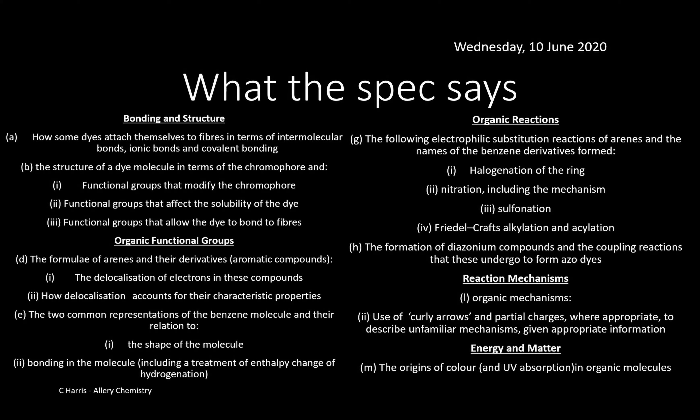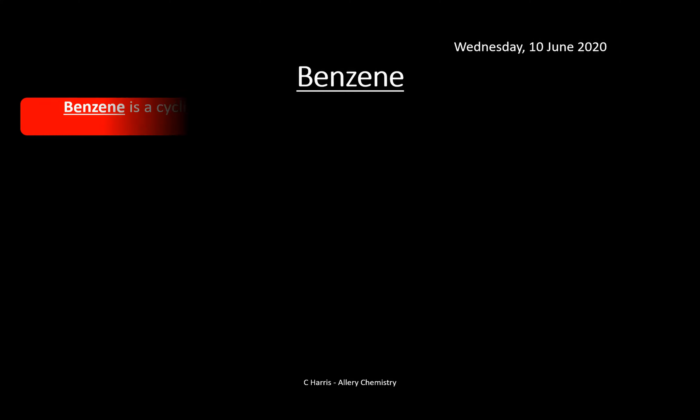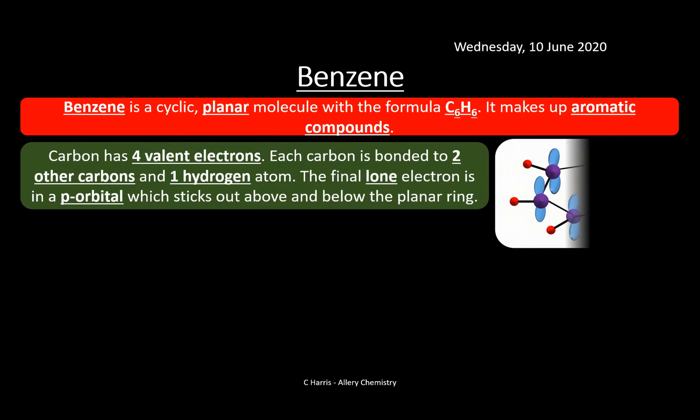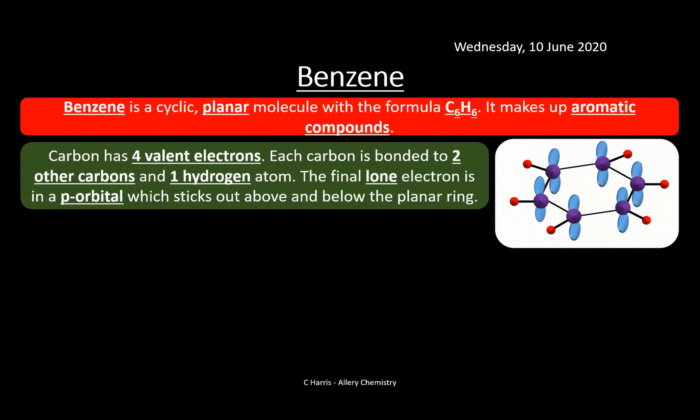We're going to start by looking at benzene, because dyes contain benzene and an understanding of benzene is very important if you're in the industry of making colourful substances like dyes. Benzene is a cyclic planar molecule with the formula C6H6, and it makes up aromatic compounds. Dyes contain benzene and aromatic compounds, so that's why it's important to understand this.